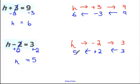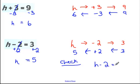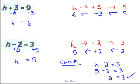One important step is to check our answer by substituting the value back into the original equation. We found H equals 5, so in H minus 2 equals 3, substitute 5: 5 minus 2 equals 3, and 3 equals 3, which is true. If you get something like 2 equals 3, your answer was wrong. At the end you should always get the left hand side equal to the right hand side.